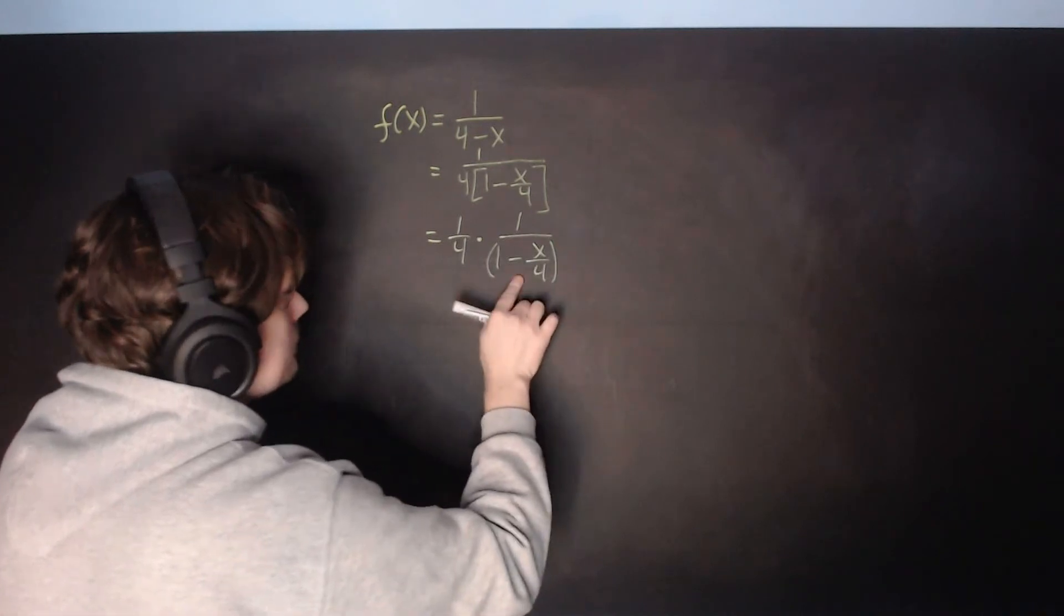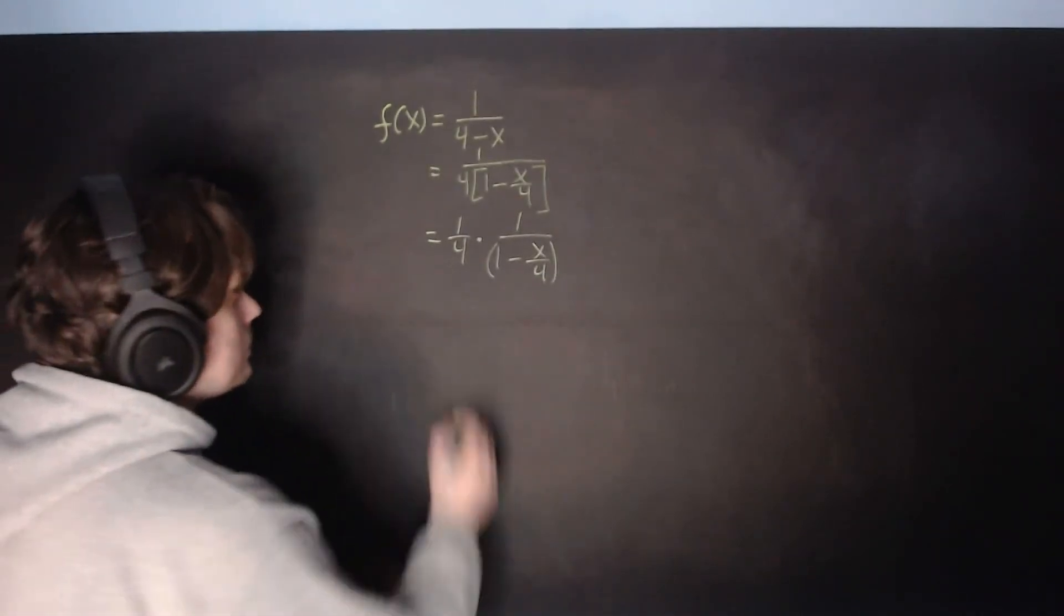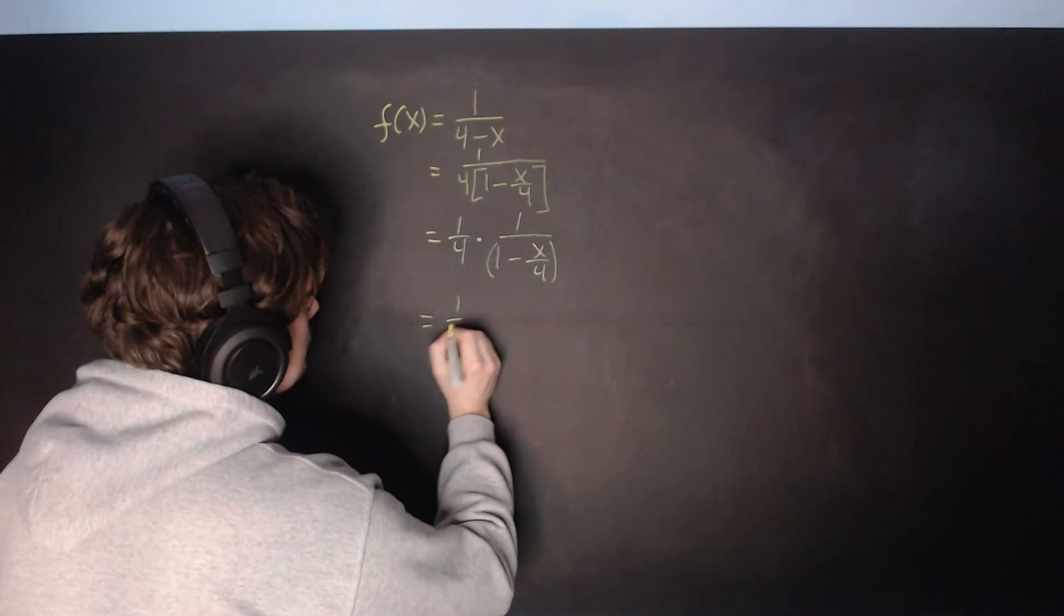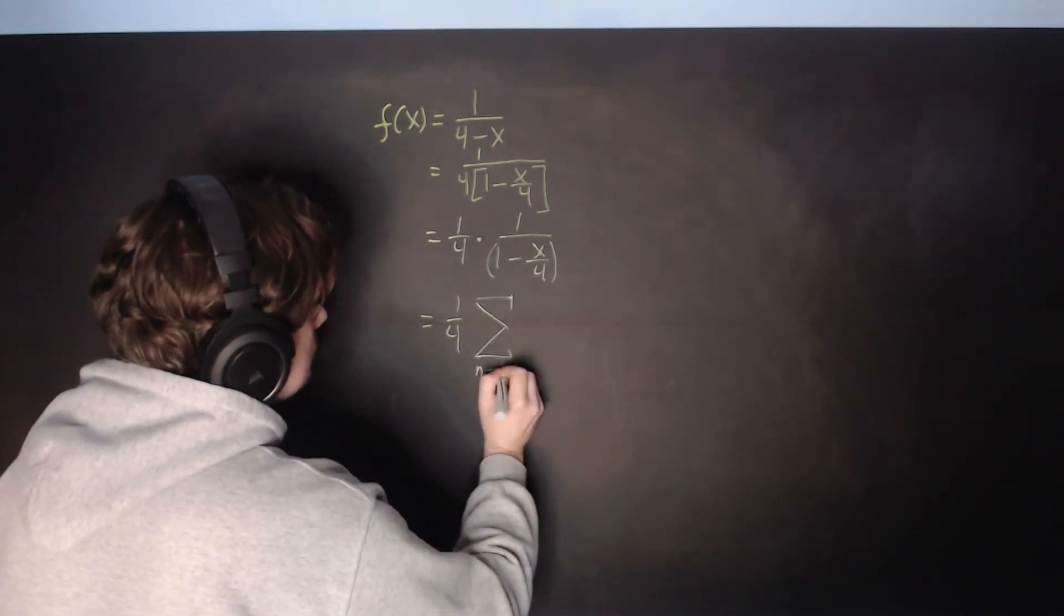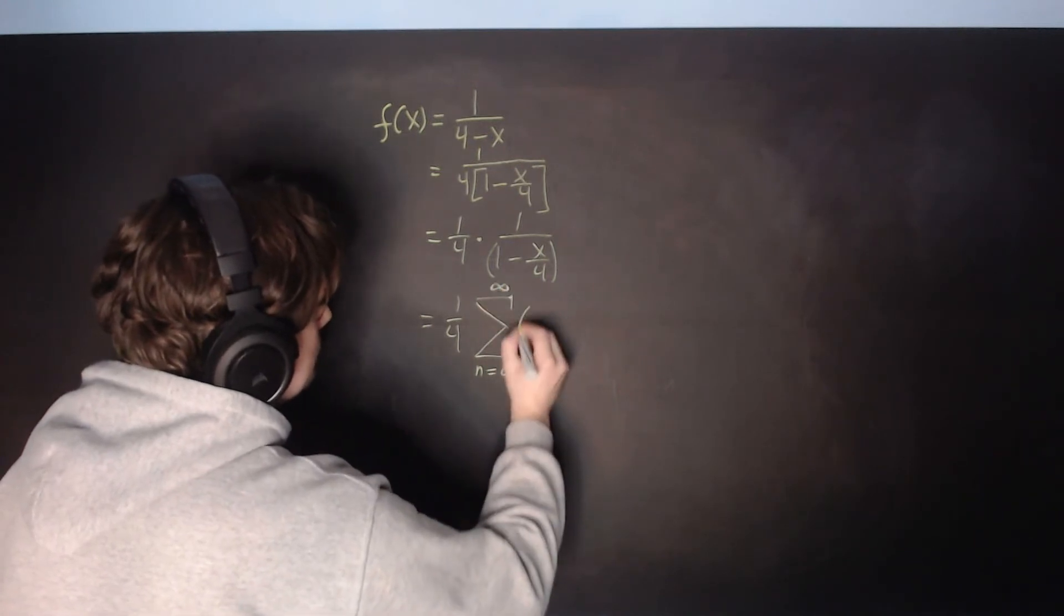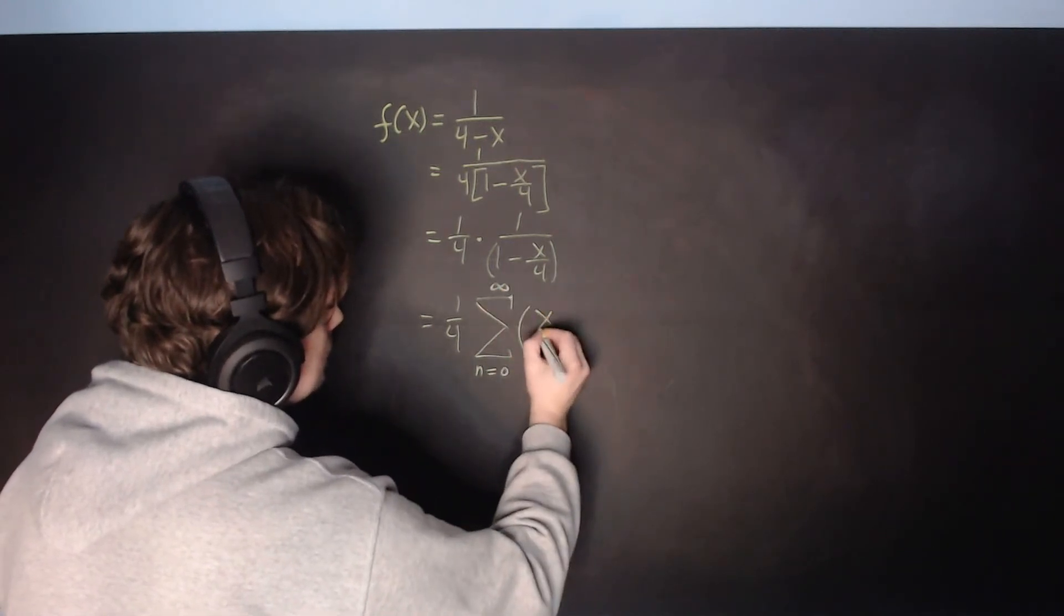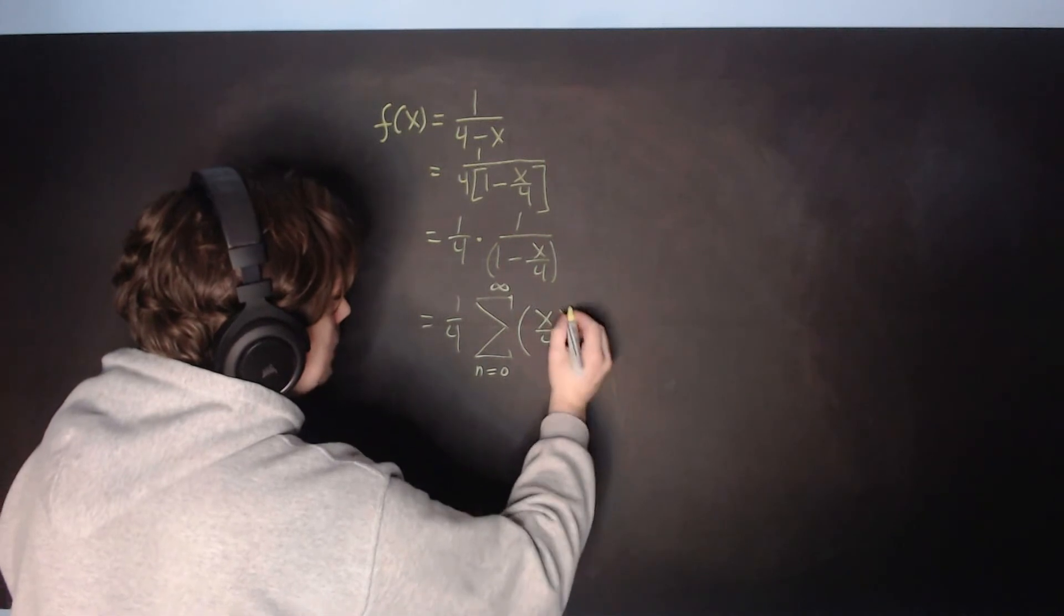This piece by itself right there can be replaced with sigma form. So it looks like 1 fourth, and it's going to be the summation. It goes from n equals 0 to positive infinity of this quantity x over 4 raised to the n.